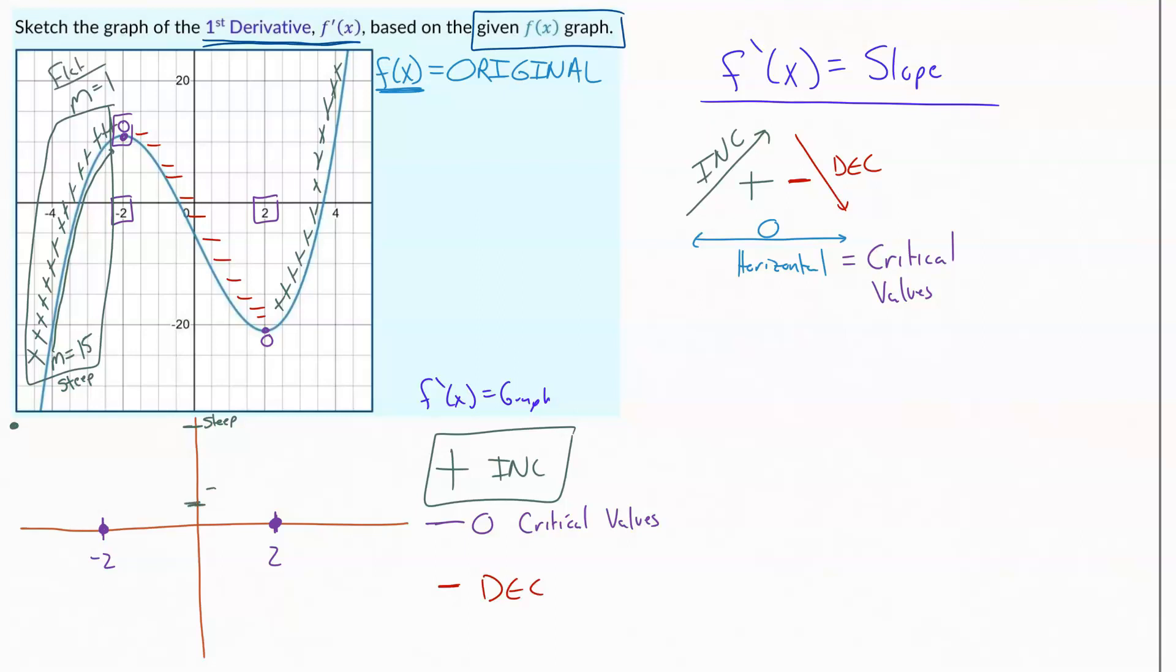So I start steep and I get flat. And so my sketch is going to do the same thing. I start somewhere steep and I move into the flat until I hit my zero that I knew had to be there.